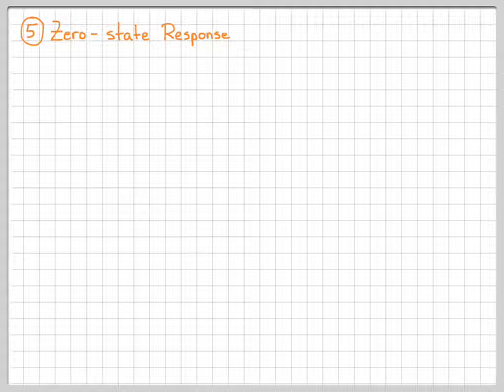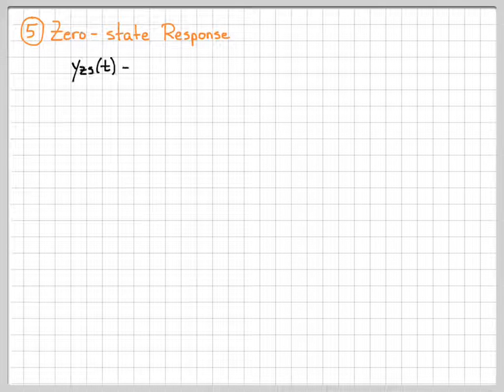So this is part three of the video sequence for working the total response example number two. In the last video, which was part two, we were able to figure out the impulse response of the system.